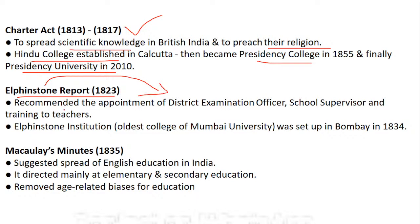The Elphinston Report recommended three things: appointment of a district examination officer, a school supervisor, and training of teachers. A question can come on what recommendations were given by the Elphinston Report. Elphinston Institute is one of the oldest colleges of Mumbai, set up in Bombay in 1834.